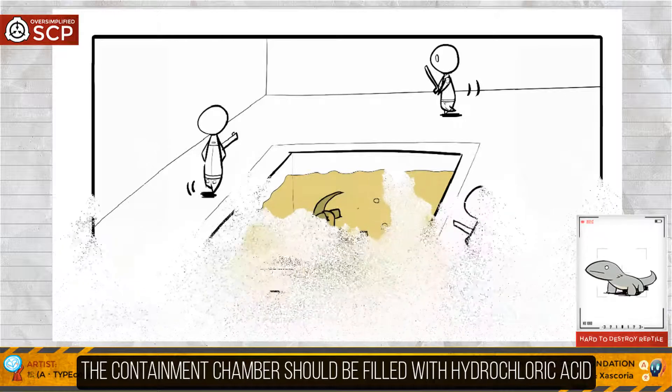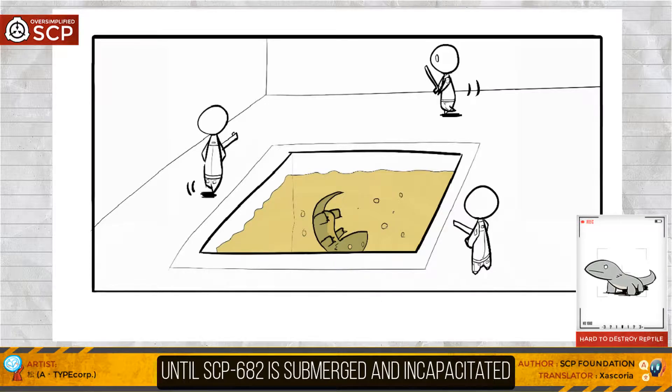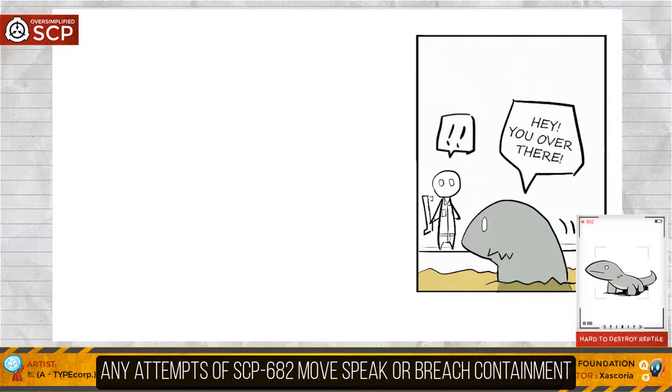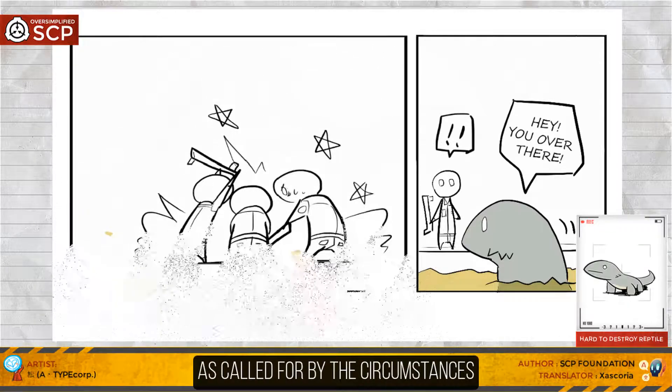The containment chamber should be filled with hydrochloric acid until SCP-682 is submerged and incapacitated. Any attempts of SCP-682 to move, speak, or breach containment should be reacted to quickly and with full force as called for by the circumstances.